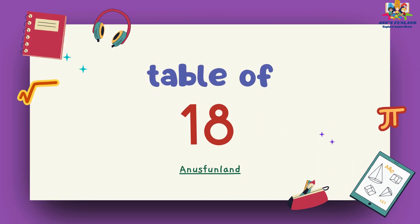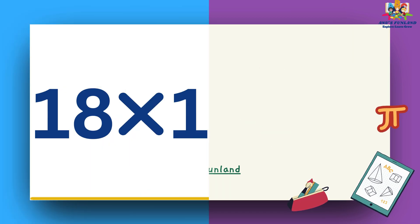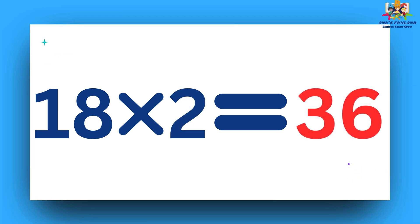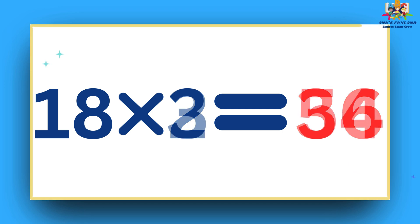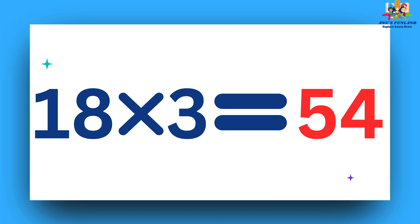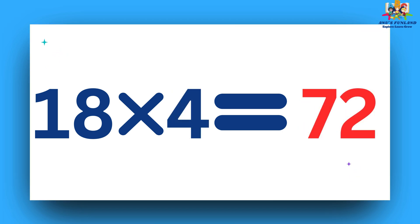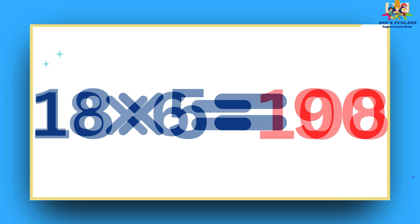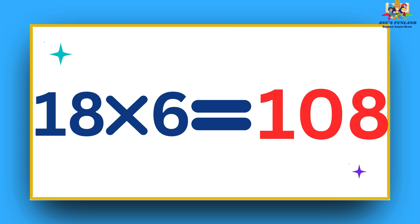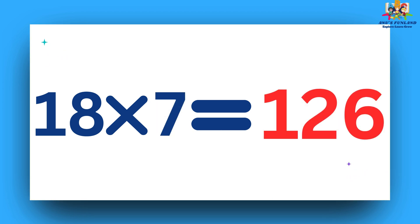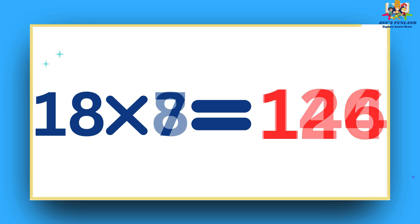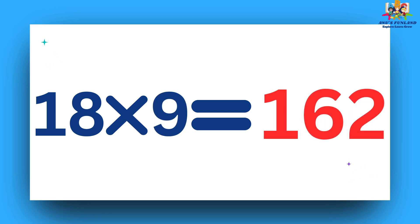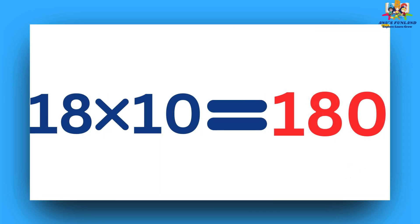Now we will learn table of 18. 18 ones are 18. 18 twos are 36. 18 threes are 54. 18 fours are 72. 18 fives are 90. 18 sixes are 108. 18 sevens are 126. 18 eights are 144. 18 nines are 162.